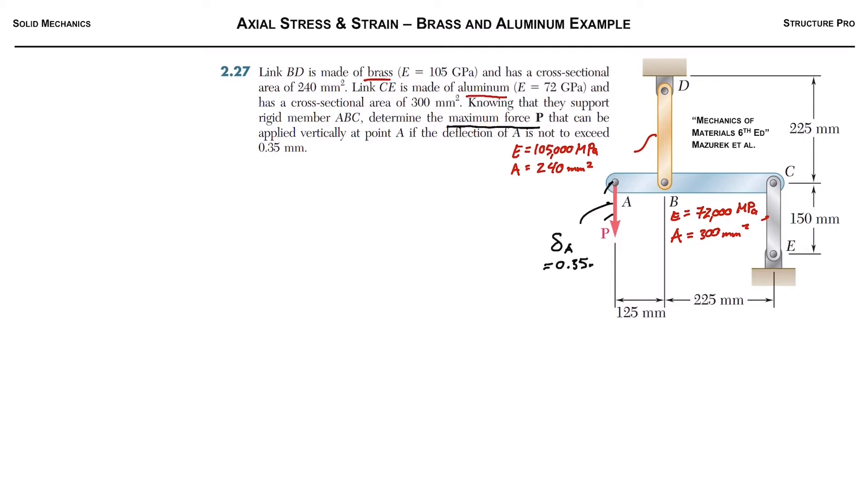So, as you guessed it, first thing we got to do is draw a free body diagram right here of the rigid member ABC. Okay, so at point A, we got our force P pulling down. At point B, we got the force FB pulling up. And then at point C, we got FC pulling down, and we'll label all the lengths between these forces while we're at it.